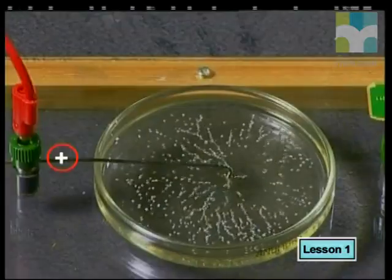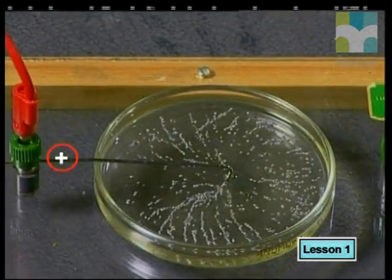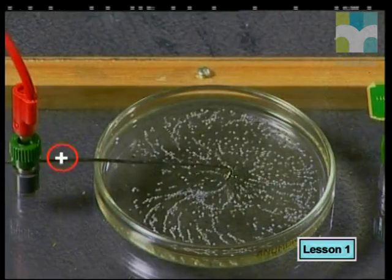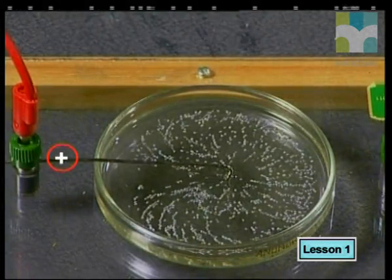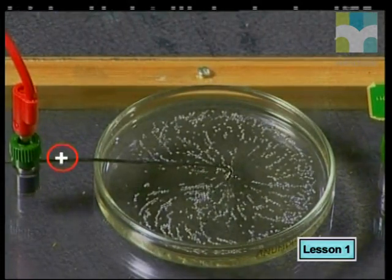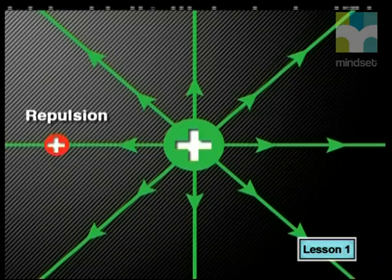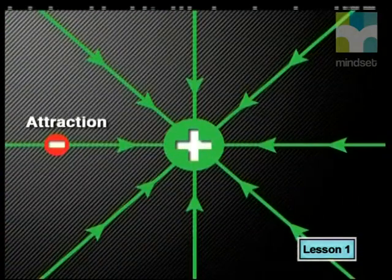In electrostatics, we learned that there is a field around a point charge — this field is known as the electric field. When a positively charged metal conductor is placed in a flat dish of oil containing small seeds, the seeds spread out to show the electrostatic force field pattern. This is because the seeds are insulators which can hold a charge, and because they are charged, they experience a force due to the electrostatic force field. We draw diagrams using field lines to represent the electrostatic field. The direction of the field is shown as the direction of the force applied to a positively charged point charge placed in the electrostatic field — in other words, the direction in which the seeds line up.